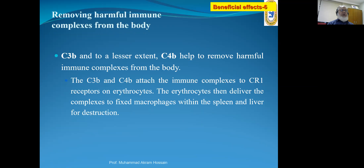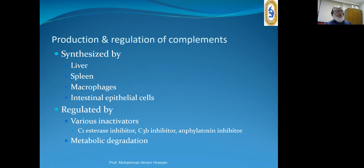Immune complex removal: harmful immune complexes are always formed in the body, and C3b and C4b help to remove them. C3b and C4b attach the immune complexes to CR1 receptors on erythrocytes. These erythrocytes then deliver the complexes to fixed macrophages within the spleen and liver for destruction. Complements are synthesized from liver, spleen, macrophages, and intestinal epithelial cells. They are regulated by various inactivators like C1 esterase inhibitor, C3b inhibitor, anaphylatoxin inhibitor, and metabolic degradation.